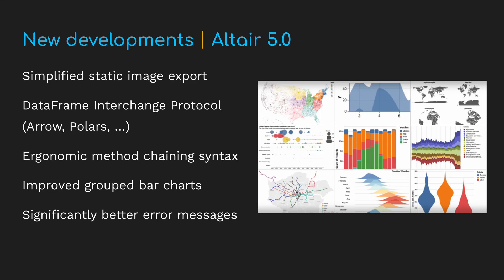Altair 5.0 was recently released — it's the first new major version of Altair in several years, and it brings a bunch of exciting new features. Exporting charts to static SVG or PNG images has been dramatically simplified, no longer requiring an external web browser or Node.js installation. Support for non-Pandas data frames like Polars was added using the data frame interchange protocol. There are improvements to the method chain syntax to make it more ergonomic, improved support for grouped bar charts, and error messages are much more helpful.